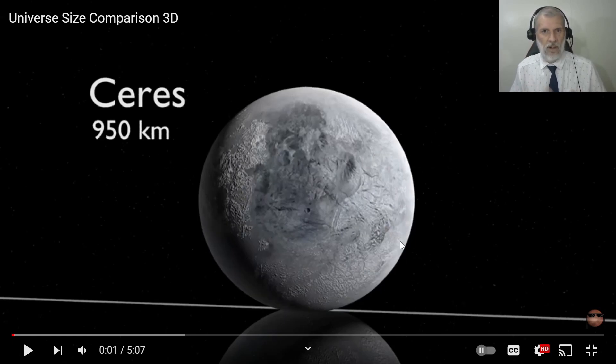So let's have a look at this video. I'll leave a link for this one as well. We're starting off with Ceres, which is one of the dwarf planets that have been added in after Pluto got the axe, so 950 kilometers.